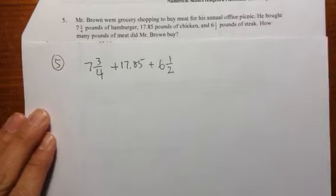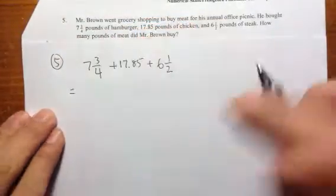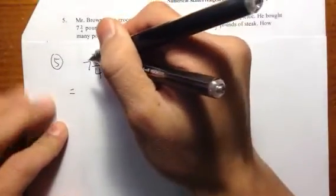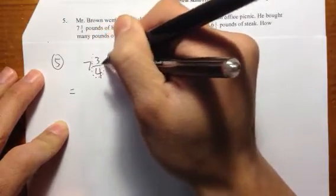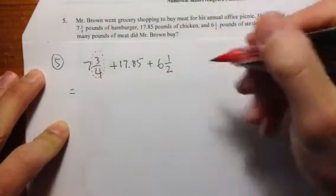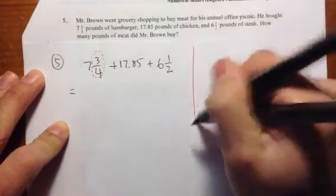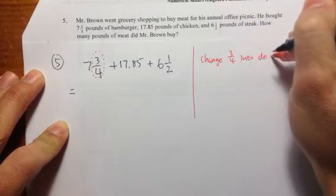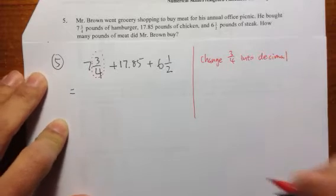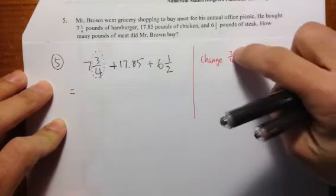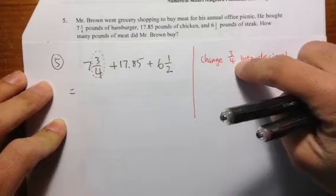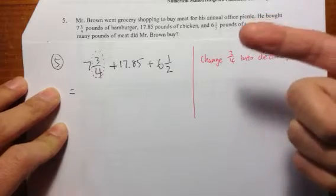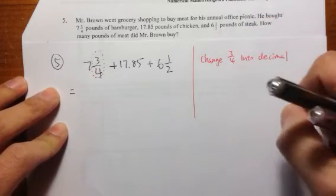So if we can add all this and change everything to decimals, that will give us the total amount of meat that Mr. Brown bought. So seven and three over four — the problem here is the three over four. Maybe you know the answer right away because this is three quarters, and three quarters you can think of as 75 cents. So three over four is just 0.75.